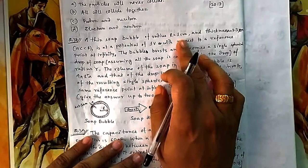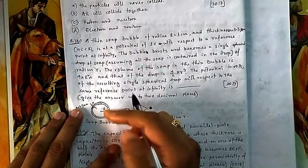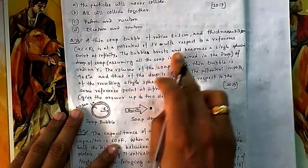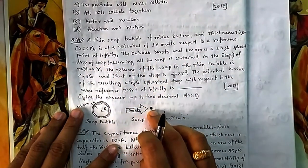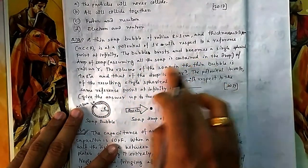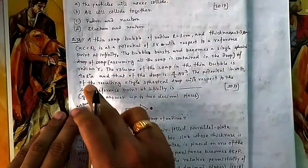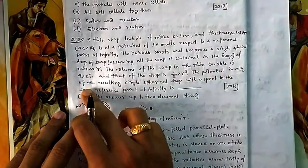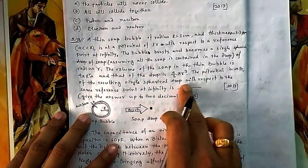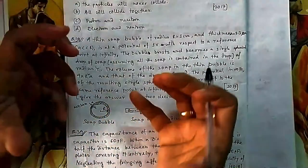For question 38: a thin soap bubble of radius R centimeters and thickness 3.3 micrometers is at a potential of 1 volt with respect to the reference point at infinity. The bubble bursts and becomes a single spherical drop. Assuming all the soap contained in the bubble forms the drop, find the potential in volts of the resulting spherical drop with respect to the same point at infinity, given to two decimal places.